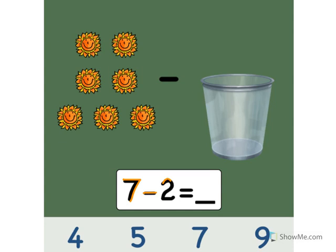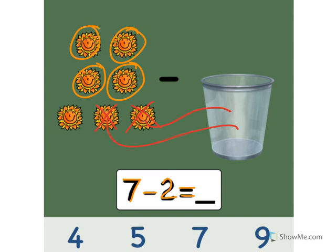7 minus 2 equals what? Let's take away 2 of the suns. 1, 2. Two suns in the trash can. What does that leave us with? Let's count. 1, 2, 3, 4, 5. Point to the number 5. Nice. 7 minus 2 equals 5. Great job.